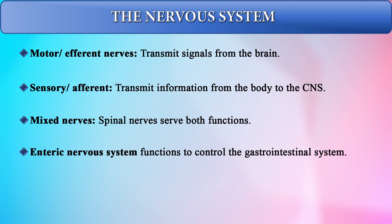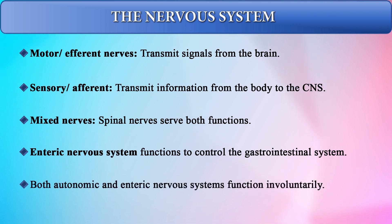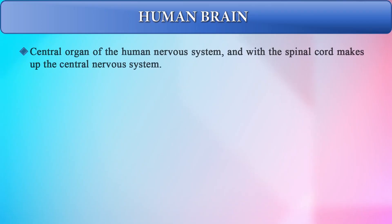We have the enteric nervous system, which functions to control the gastrointestinal system. Both the autonomic and the enteric nervous system function involuntarily. The human brain is the central organ of the human nervous system and, with the spinal cord, makes up the central nervous system.